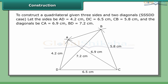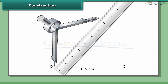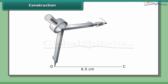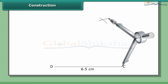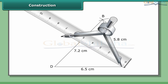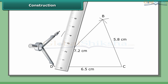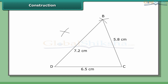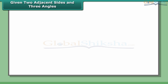Constructing triangle BCD: draw DC = 6.5 cm. With D as center and radius 7.2 cm, draw an arc. With C as center and radius 5.8 cm, draw an arc to cut the previous arc at B. Join CB and DB. Constructing triangle ACD: with C as center and radius 6.9 cm, draw an arc on the same side of DC. With D as center and radius 4.2 cm, draw another arc to cut the previous arc at A. Join CA, DA, and AB. Then ABCD is the required quadrilateral with diagonals AC and BD.